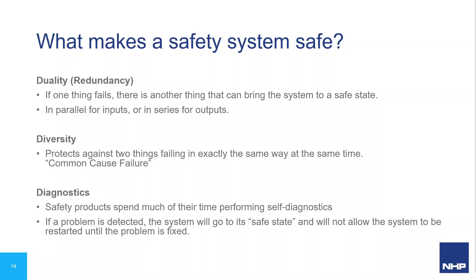Diversity ensures that multiple devices operating in a redundant system don't all fail from the same fault. For example, if two switches from the same batch and manufacturer have an anomaly where they fail dangerously under a high voltage spike, they could fail simultaneously in a power surge. Whereas if you have two sensors from different manufacturers or different types — one electromechanical, one solid state — the likelihood of the same fault damaging both in the same way at the same time is greatly reduced.